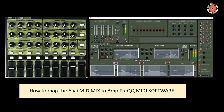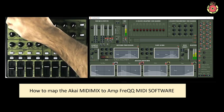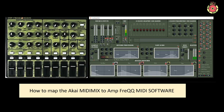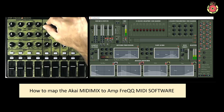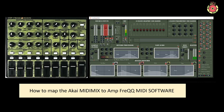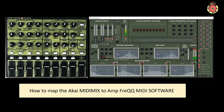We're now on the final row of dials. We've got the frequencies for the parametric EQ — again in the middle, this one in the middle, and these two. And these are the source gains, which are these four faders here. I'm just going to go ahead and assign them as such. And that's it — that's everything assigned.